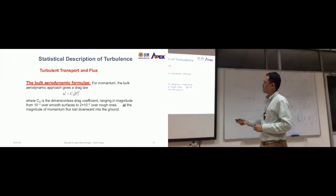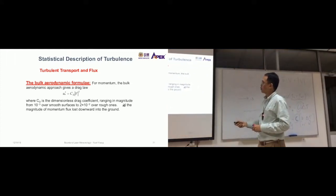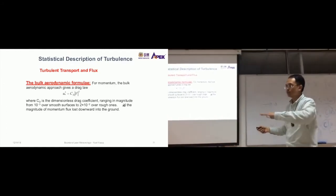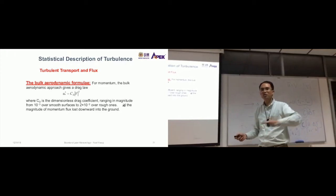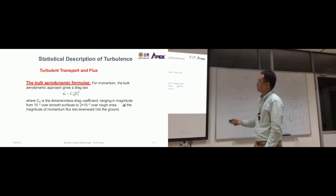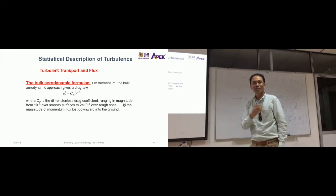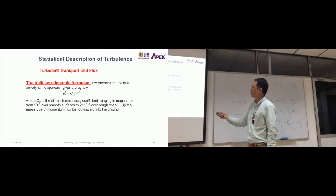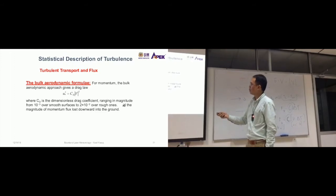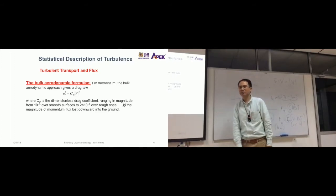Where cd is the dimensionless drag coefficient, ranging in magnitude from—over very smooth surfaces like ocean, ice, or snow—it's about 0.001 without a unit, just a coefficient. But over rough surfaces, it's about 0.02. The higher this u* value means the higher the momentum loss into the ground, the dissipation into the ground.